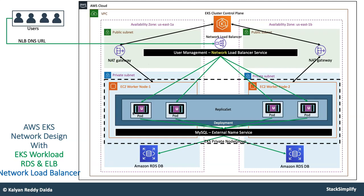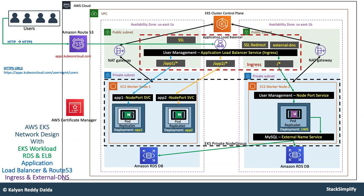Then you will move on to the Ingress service, which is super advanced with tons of features. With the Ingress service you are going to implement context path-based routing: with three applications deployed, slash app1 should go to App1, App2 should go to App2, and anything other than that should go to the user management microservice. In addition to that, in the same Ingress service you will implement SSL, enable HTTPS, implement HTTP to HTTPS redirection using SSL redirect, and also implement external DNS in the ALB Ingress load balancer.